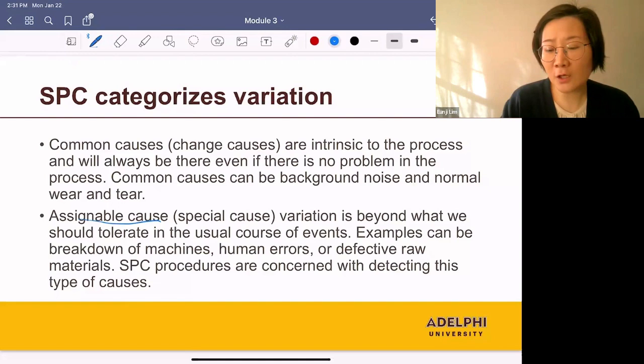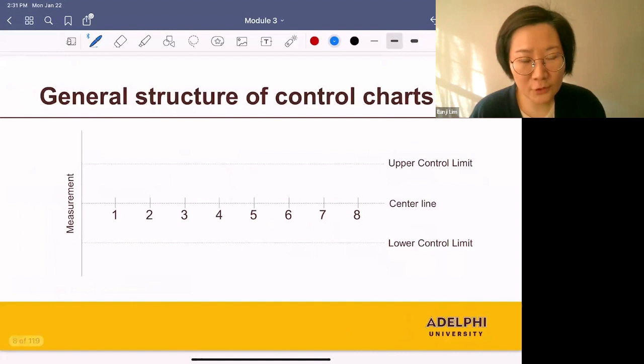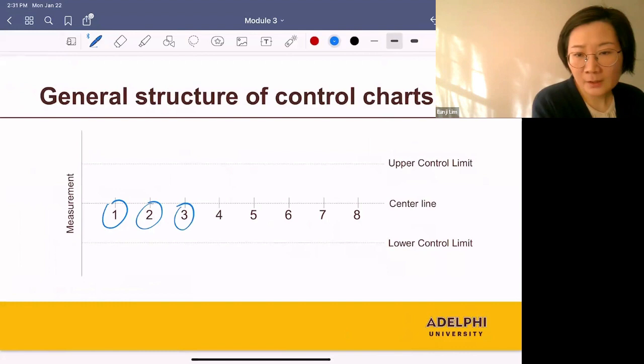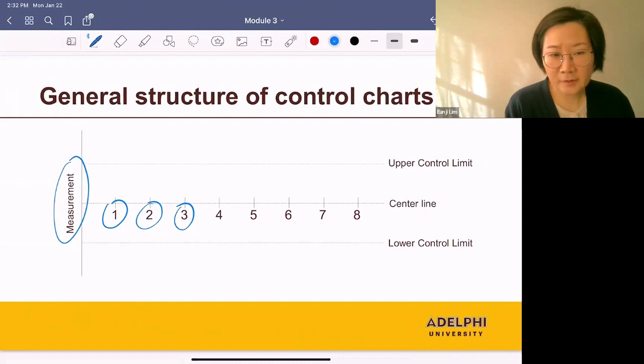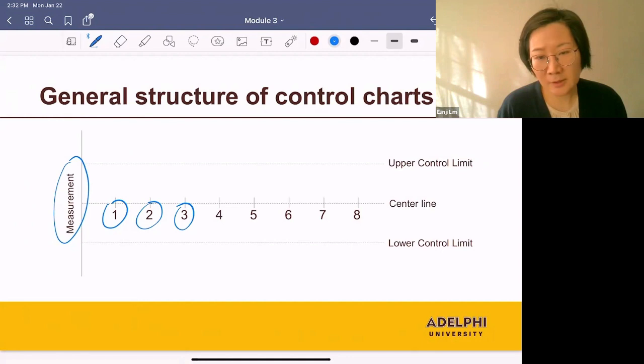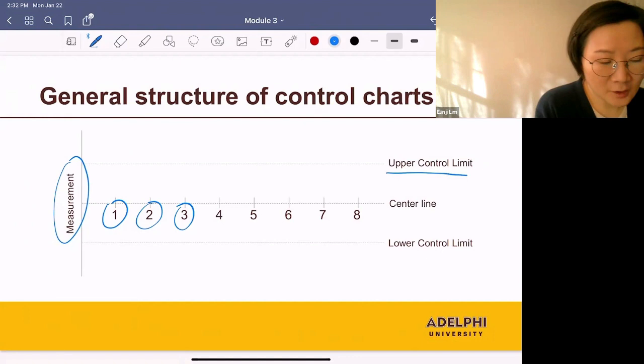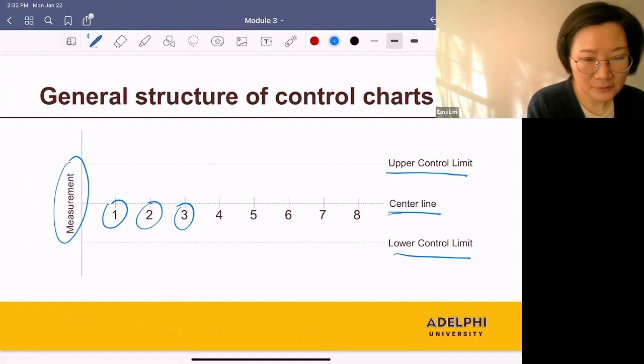Here's the general structure of control charts. On the x-axis, we have every hour. On the y-axis, we have measurements from our process—the sample mean, sample range, or sample proportion, depending on the dataset. We also have the upper control limit, lower control limit, and center line, which is the target value.